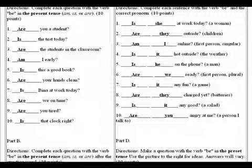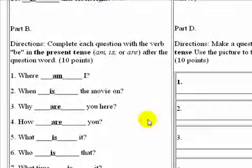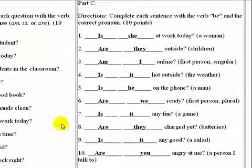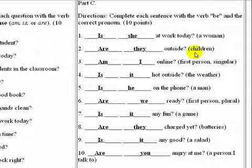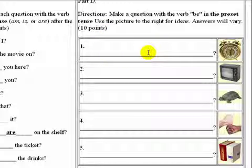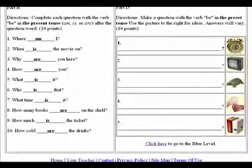Here we have the answers. You can check your answers. Here are the answers for the first part, and this is part B — here are those answers. Here we have the answers for part C. And in this one, you made up your own questions, so it's difficult to give you the answers because they are of your own creation. This completes our video on asking questions with the verb be in the present tense. Thank you.